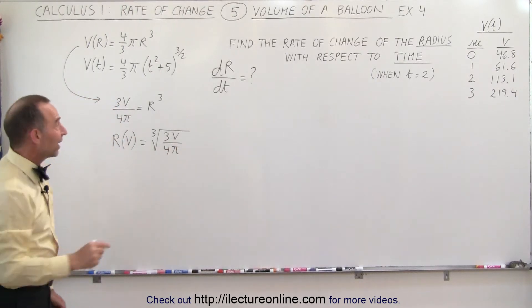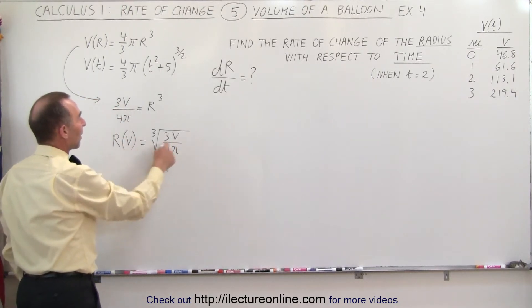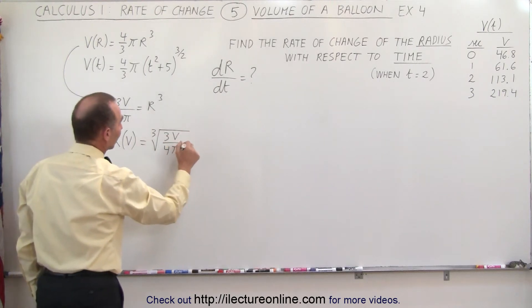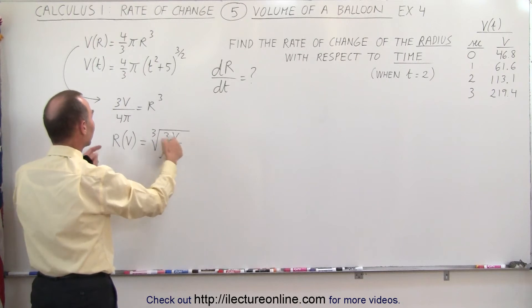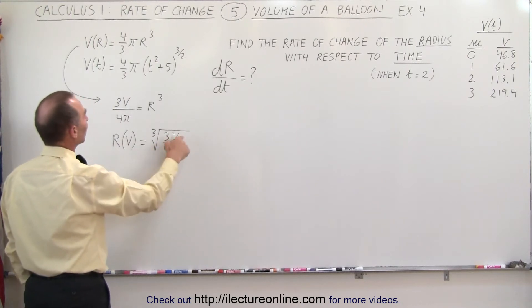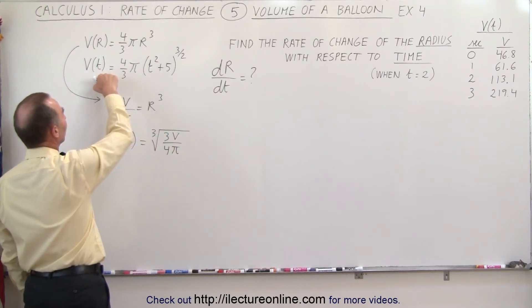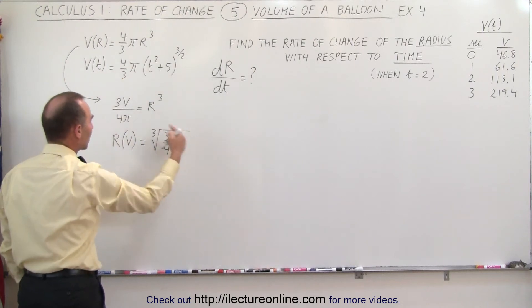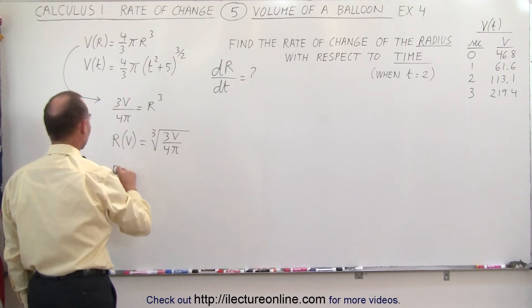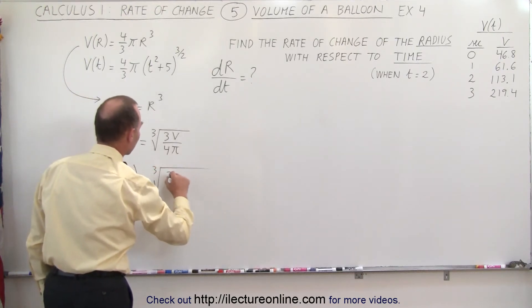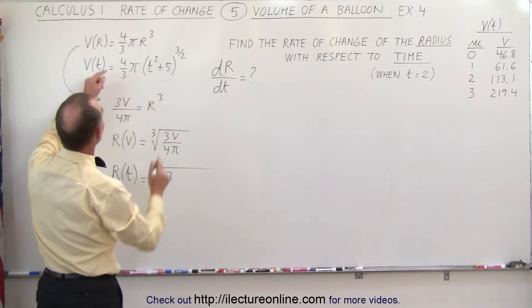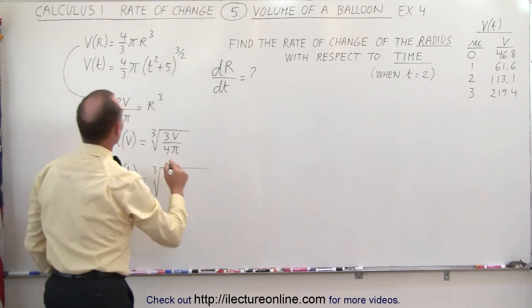And then, since we want to find the radius as a function of time, I can now substitute, because this here is the volume as a function of the radius, right? It's proportional, or at least it's related to each other, but now when we replace the volume as a function of time into here, let's see what we get. So now we can say that the radius as a function of time is equal to the cube root of 3 times the volume. Now, the volume is equal to this, so that would be,